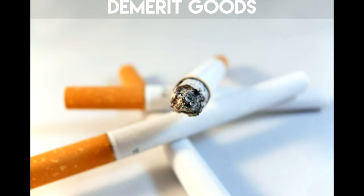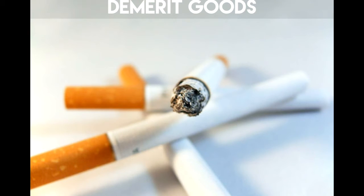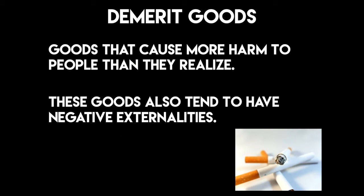The other side of that is something like smoking. If you're walking behind somebody on the street who's smoking, or you're in a restaurant where somebody is still allowed to smoke, you're being harmed by their decision to smoke — you're facing a cost to your health because they choose to consume cigarettes. The cigarette company got paid for the sale, the individual is smoking the cigarette and enjoying it, but you are facing an undesirable cost to your health because of this transaction. Cigarettes are considered demerit goods because they cause more harm to people than they realize and, as I just mentioned, they have this negative spillover effect, or negative externality.